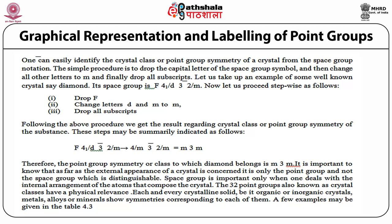It is important to know that as far as the external appearance of a crystal is concerned, it is only the point group and not the space group which is distinguishable. Space group is important only when one deals with the internal arrangement of the atoms that compose the crystal. The 32 point groups, also known as crystal classes, have physical relevance — each and every crystalline solid, be it organic or inorganic, metals, alloys, or minerals, shows symmetries corresponding to one of them.